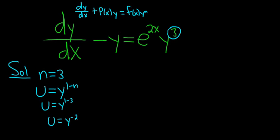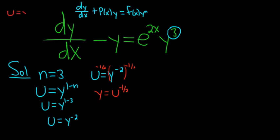The next step is to solve for y. We have u equals y to the negative 2. To solve for y, we raise both sides to the negative one-half power, giving us y equals u to the negative one-half. You could do it the long way: u equals y to the negative 2 means u equals 1 over y squared, then multiply by y squared to get y squared·u equals 1.